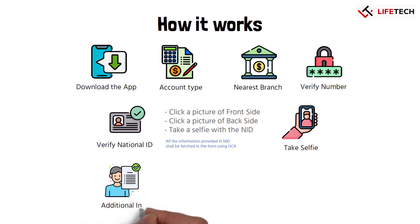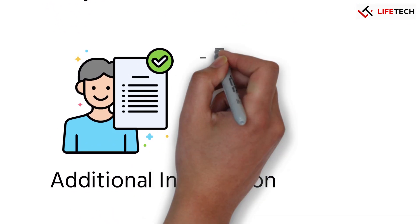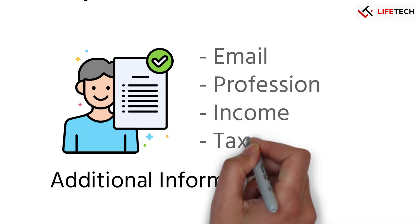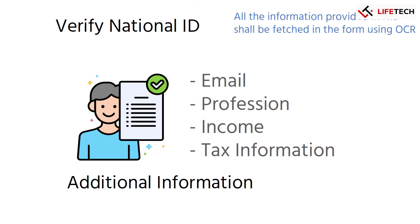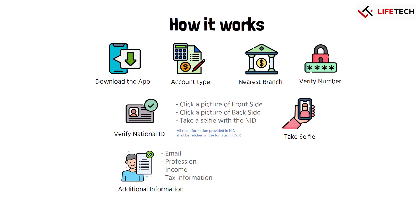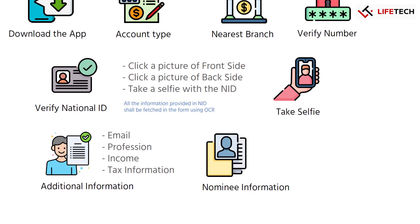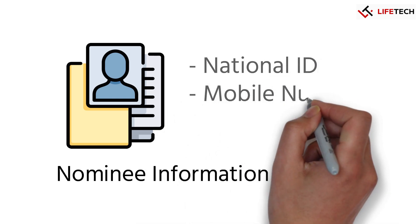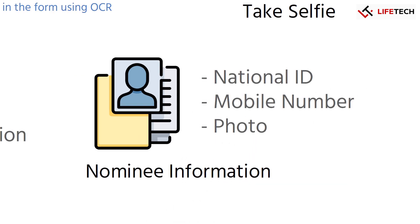Additional information: you are required to provide some additional details such as your email, profession, income, and tax information. You also need to submit nominee information including their national ID, mobile number, and photo.